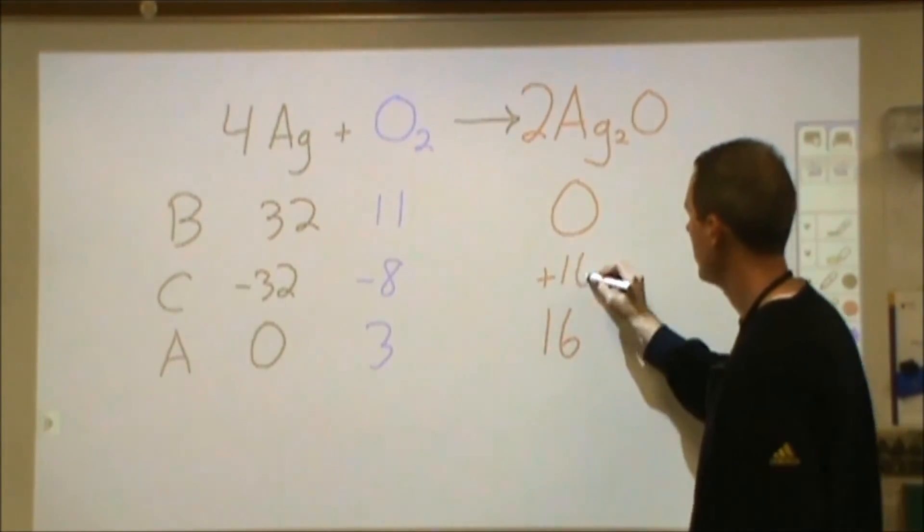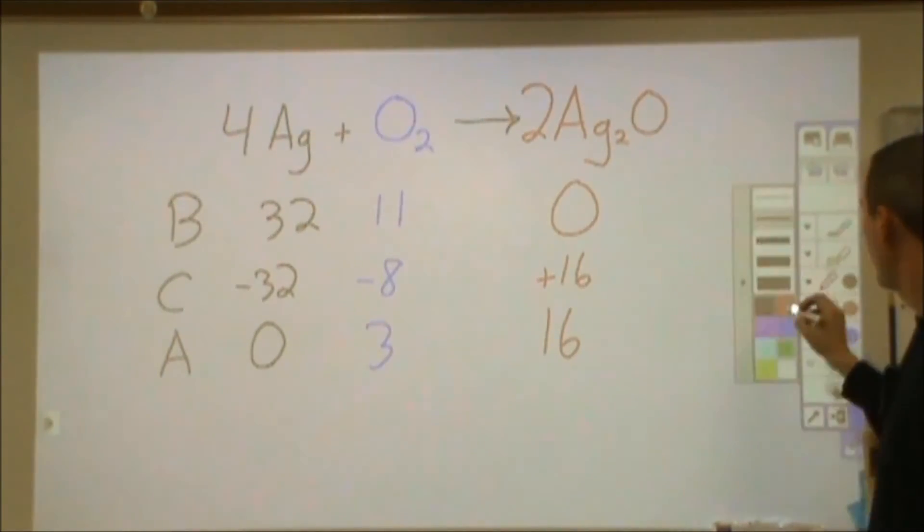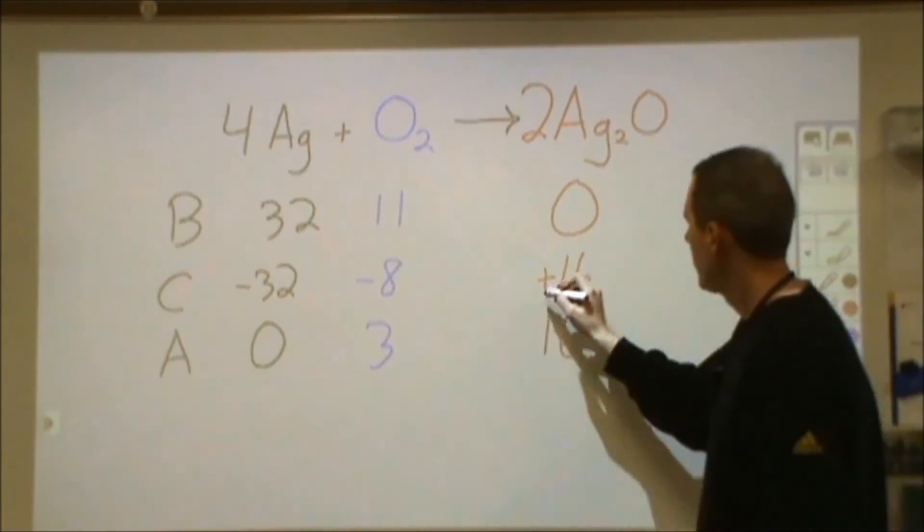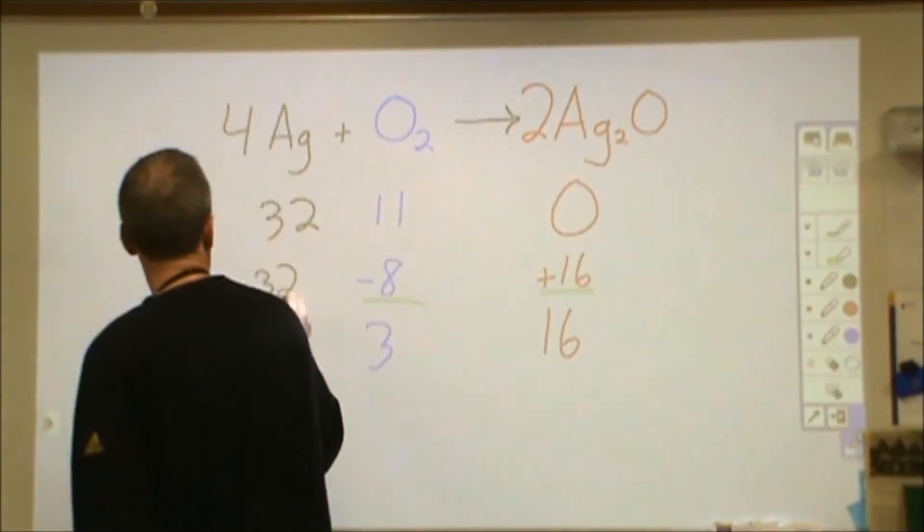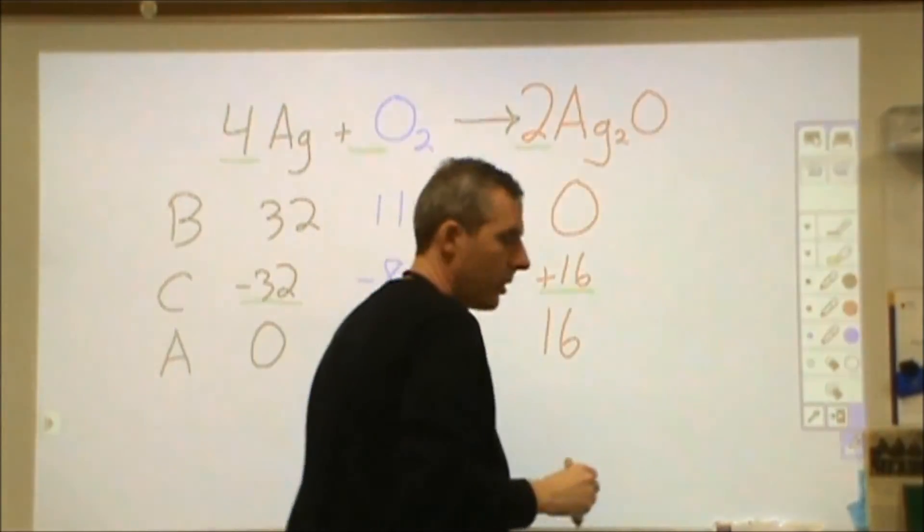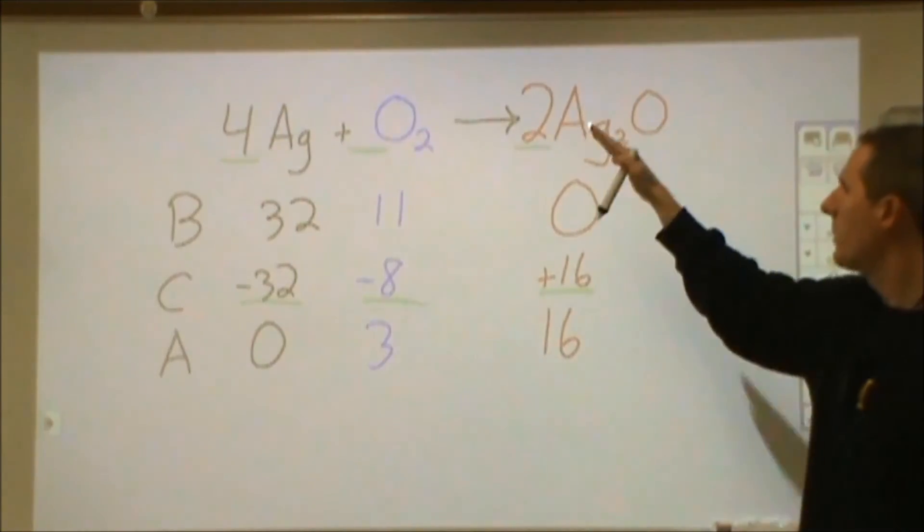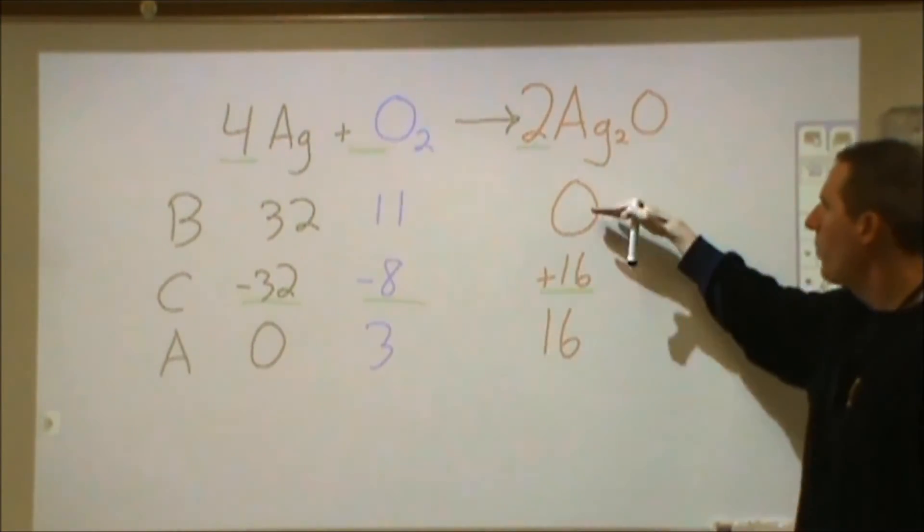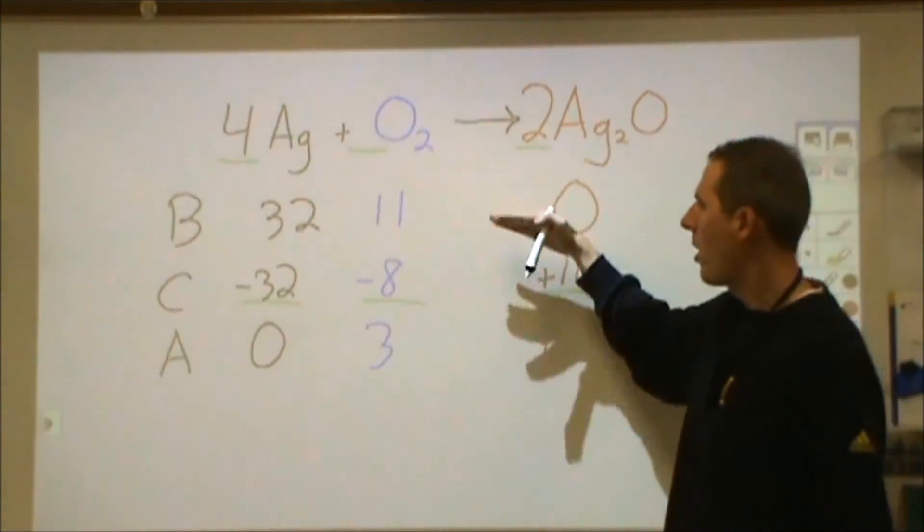Now when we look at the proportionality here, what we see is that sixteen to eight to thirty-two is a ratio of four to one to two. And so the proportionality of my balanced reaction is not in what I start or what I end with, but it's how much is reacting.